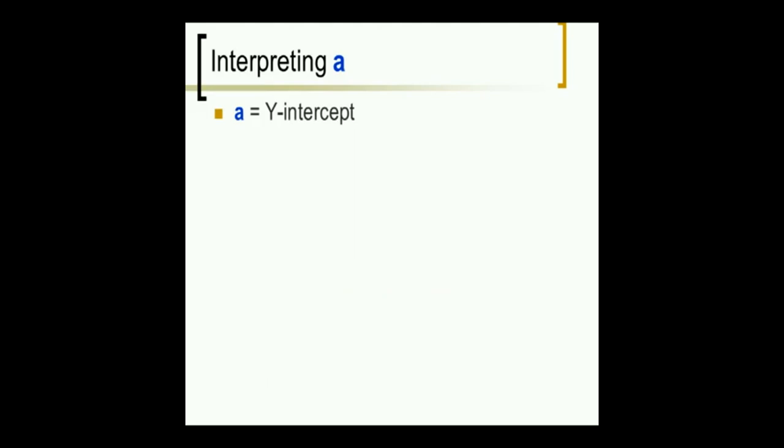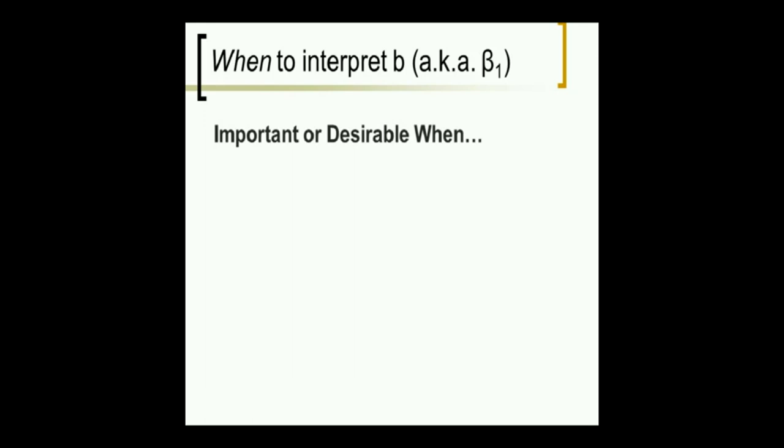Now, interpreting a is a different issue. A is the y-intercept. It's the predicted y-score if x was 0, and sometimes we care, but sometimes we just totally don't. When do we interpret b? It's important or desirable to interpret b when the units are easily understood. Units like dollars, hours, pounds, miles, GDP money, rank in football championships.